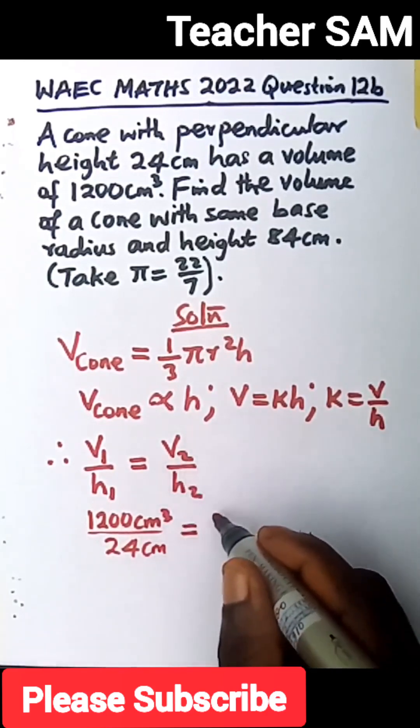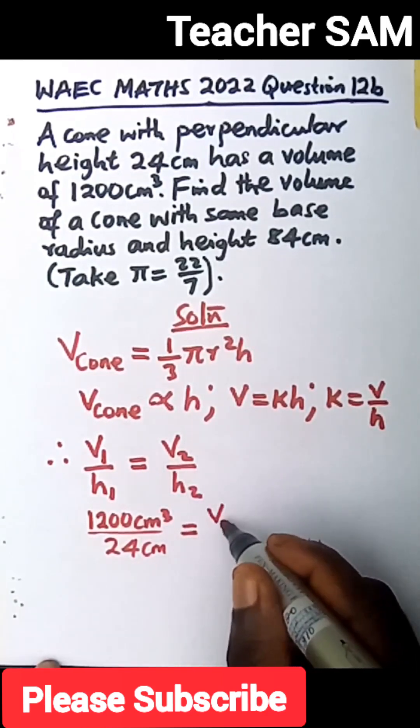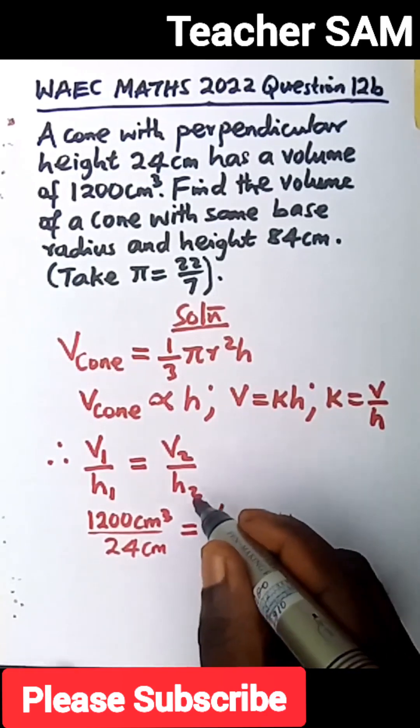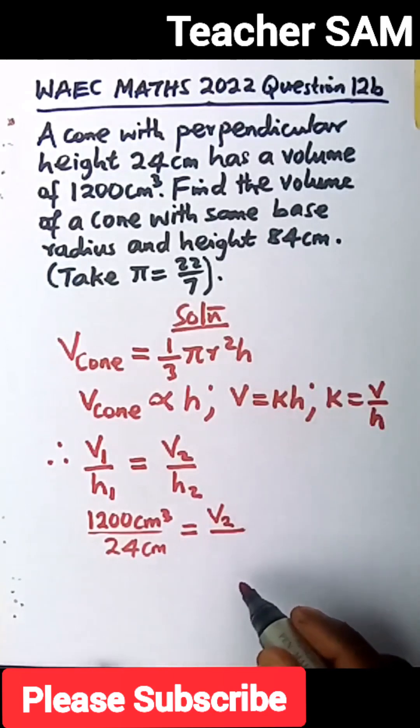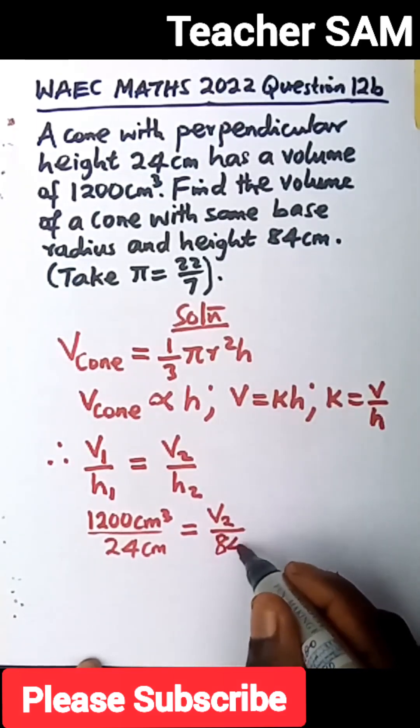The volume of the second is what we are required to calculate for. So v2, the height of the second was given to us in the equation, 84 cm.